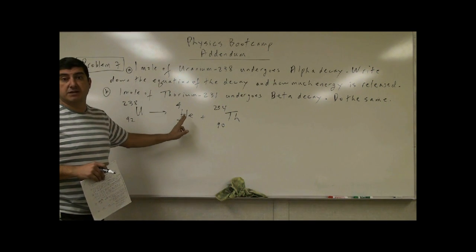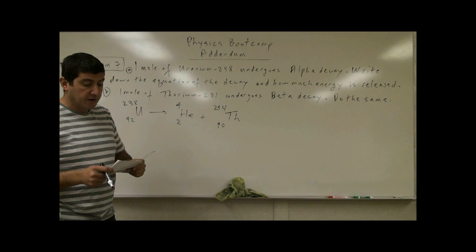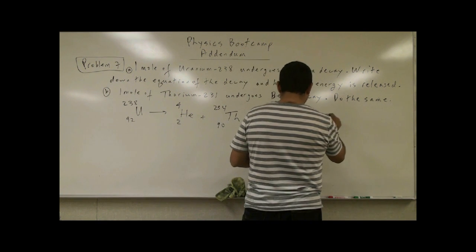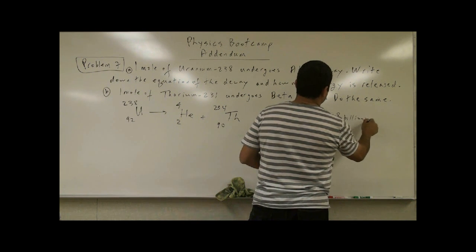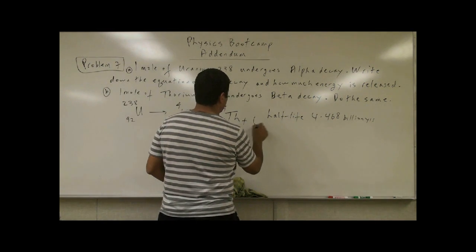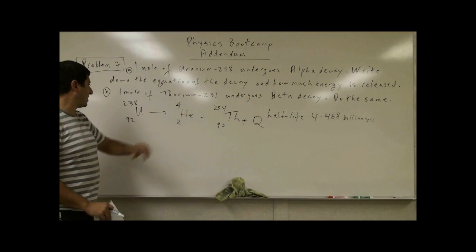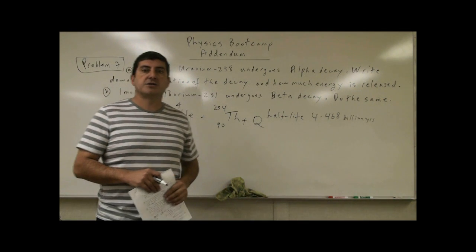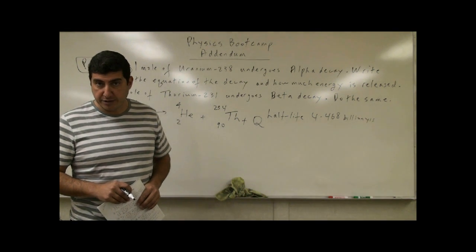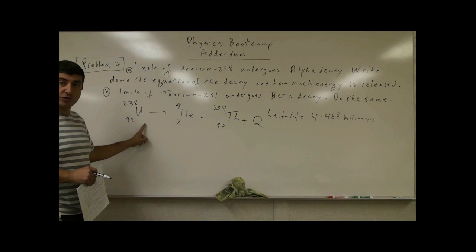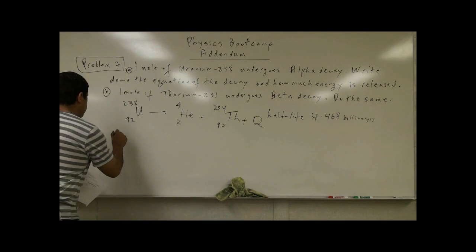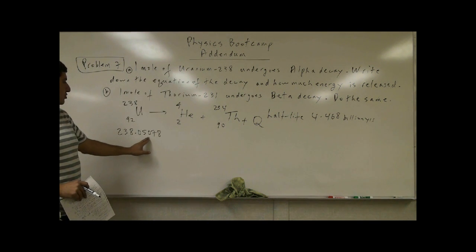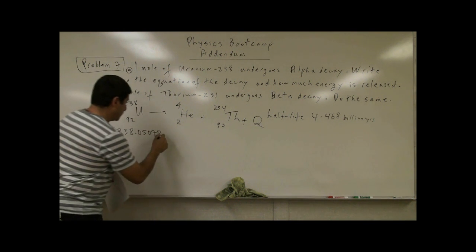And it decays via alpha decay, and it has a half-life of 4.468 billion years. Let us now calculate how much heat is released here. So we can call that Q. How much heat is released in this decay? Well, what you have to do is go to some source. You have a periodic table, you could go online.